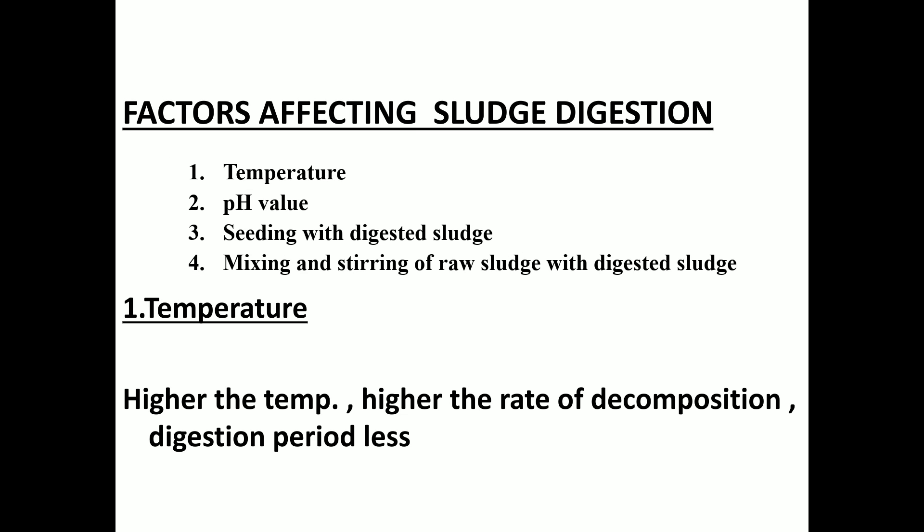Next, we look at factors affecting sludge digestion. There are four main factors: 1. Temperature, 2. pH, 3. Seeding with digester sludge, and 4. Mixing and stirring of raw sludge with digested sludge.